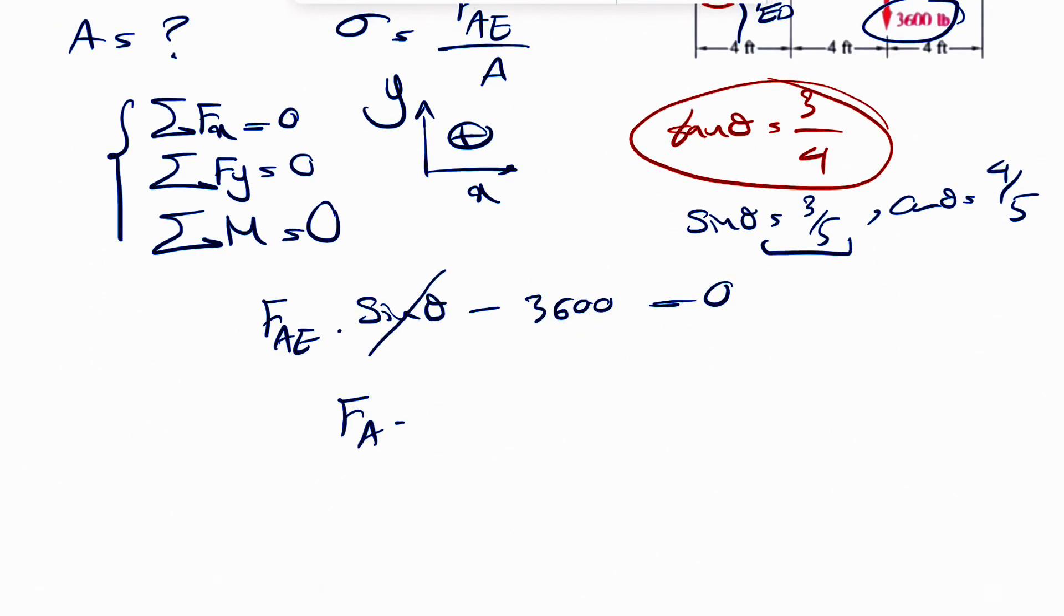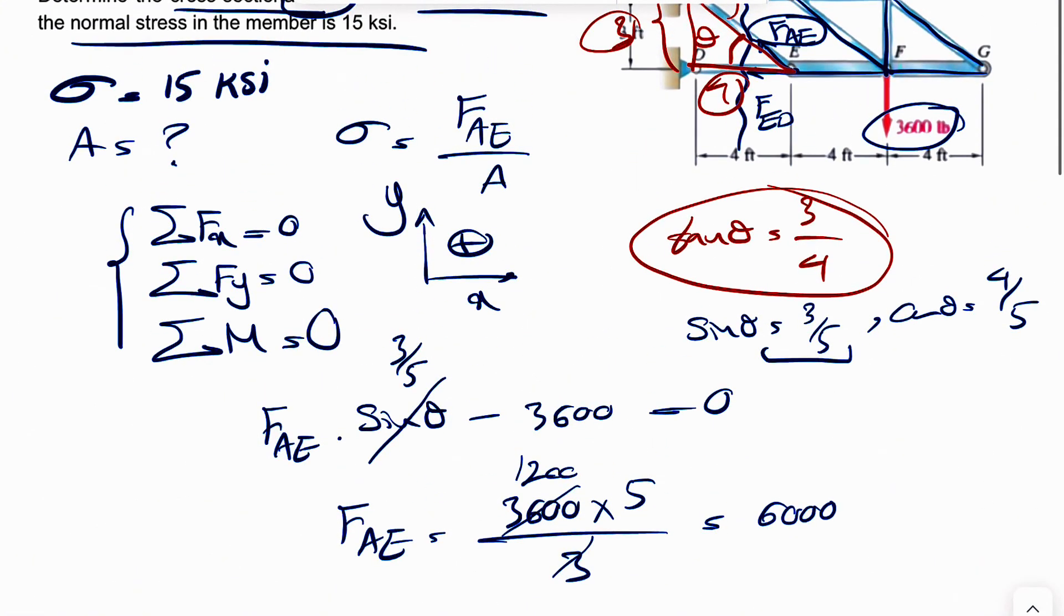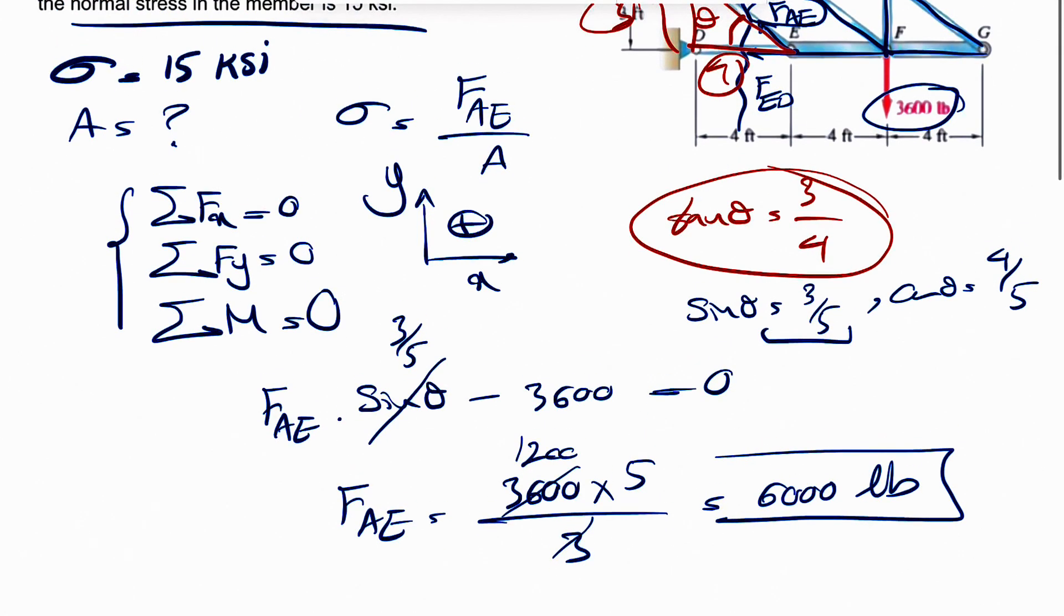So our FAE would be 3600 times five divided by three. So this is three over five. Let's just see what we get if we just do 1200. And this is going to give us 6000 and the force will be in pound units.